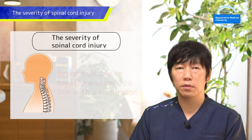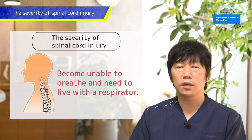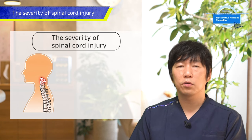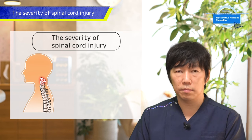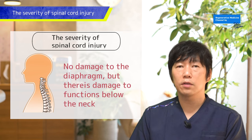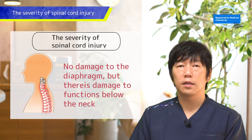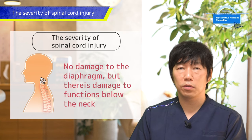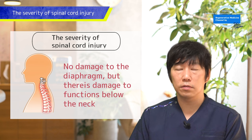A spinal cord injury becomes more severe as the damage occurs higher up. For example, if you injure the third bone from the top of your neck, you will not be able to breathe on your own and will need to use a breathing apparatus. If the damage is at or below C4, the muscles needed for breathing, called the diaphragm, are still functioning, so you can breathe on your own.